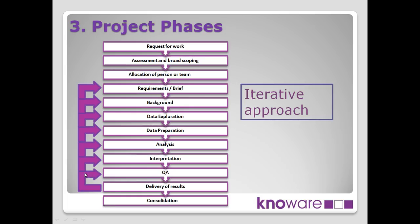It's important to point out the arrows on the left-hand side — an iterative approach is what we thoroughly recommend. You may get down to the analysis part and find something's not quite right, and you need to go back to a previous phase — whether that's redoing the requirements, adjusting them, or going back to data preparation. These days, Agile is popular as a formal approach, but it could be all sorts of other iterative approaches you may use.